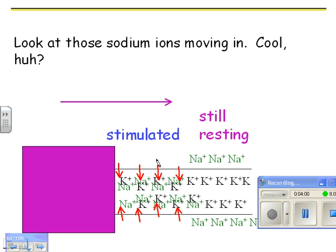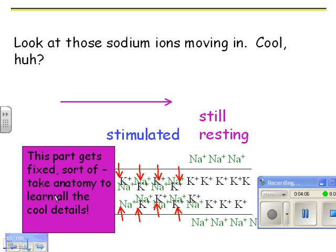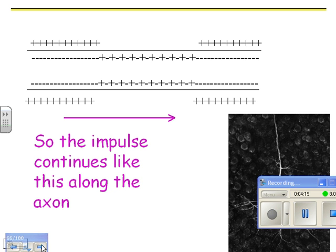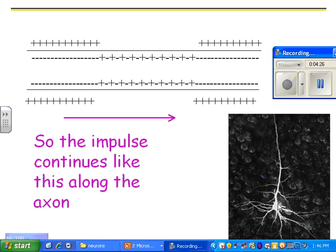Look at the sodium ions moving in. And this part gets fixed. Something kind of funky happens with the potassium, but anyway, it ends up getting fixed. So you have the sodium-potassium pump fix that with active transport. We'll look at that in a minute. But look at the impulse moving along. This is just a cool picture of a neuron. This is the cell body. These are probably dendrites, and that's probably the axon.